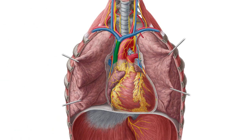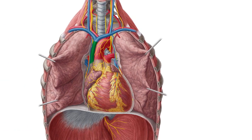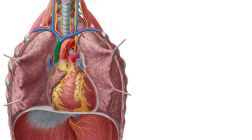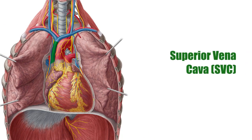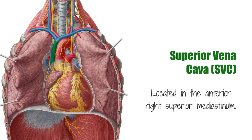The superior vena cava, also known as the cava, is a short but large diameter vein located in the anterior right superior mediastinum. In this tutorial, we will refer to it as the SVC. You can see now, on this image of the anterior view open thorax, the SVC highlighted in green.